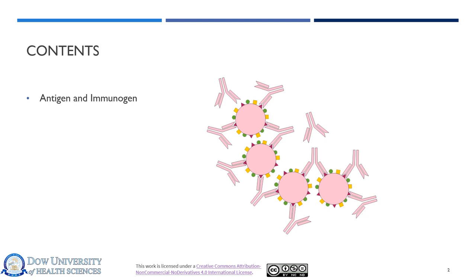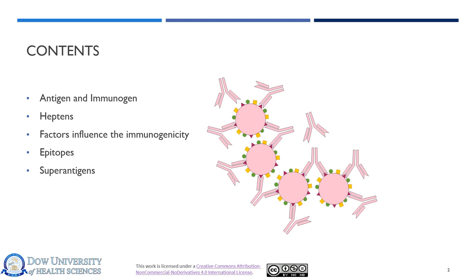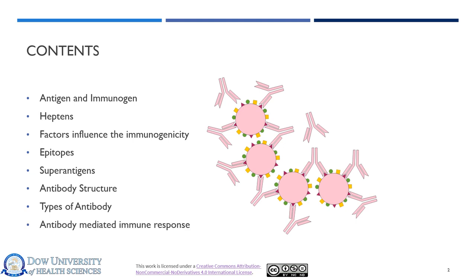These are the contents which will be discussed throughout the lecture. We will first discuss the basic concepts of Antigens and Immunogens, then what are Haptens and the factors which influence the Immunogenicity of an Immunogen. Then we will discuss Epitopes and Super Antigens, and the basic structure and functions of antibody and their types, in addition with the immune response against any antigen.